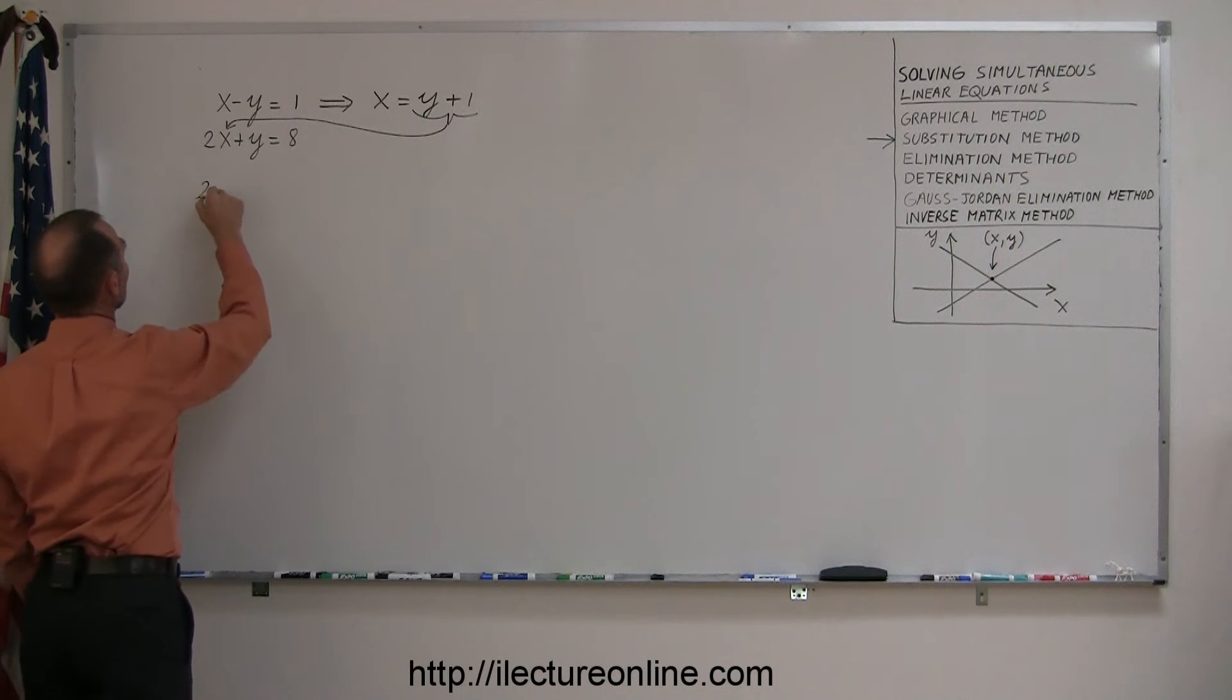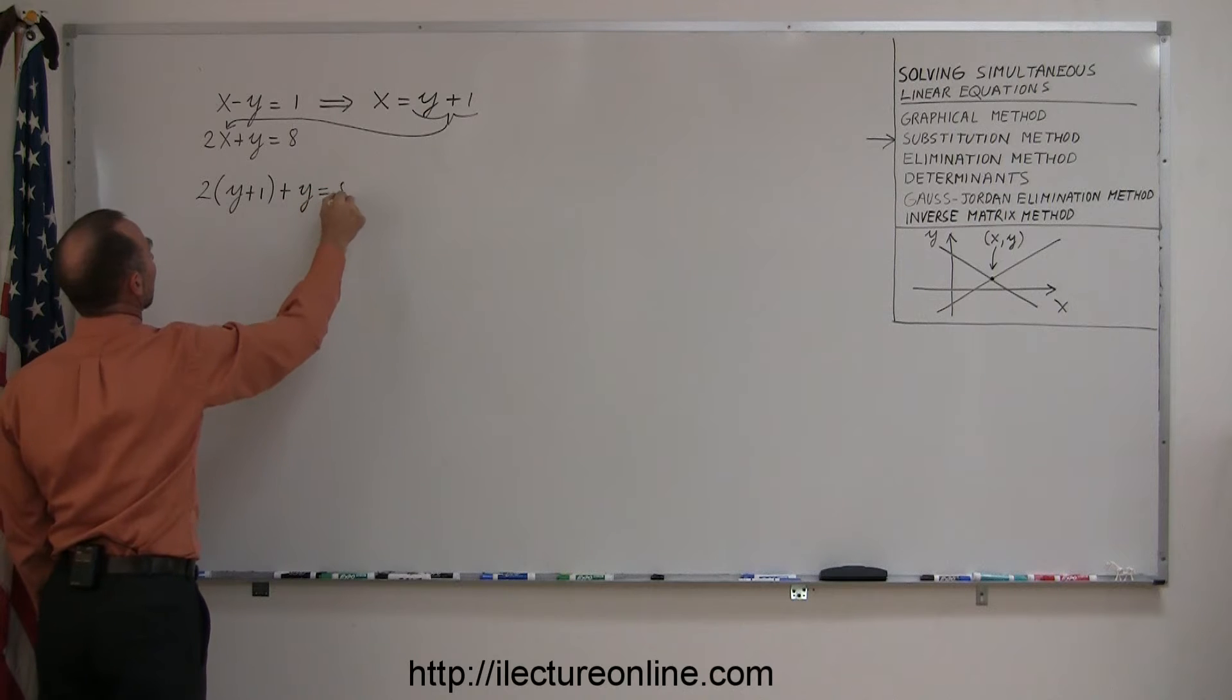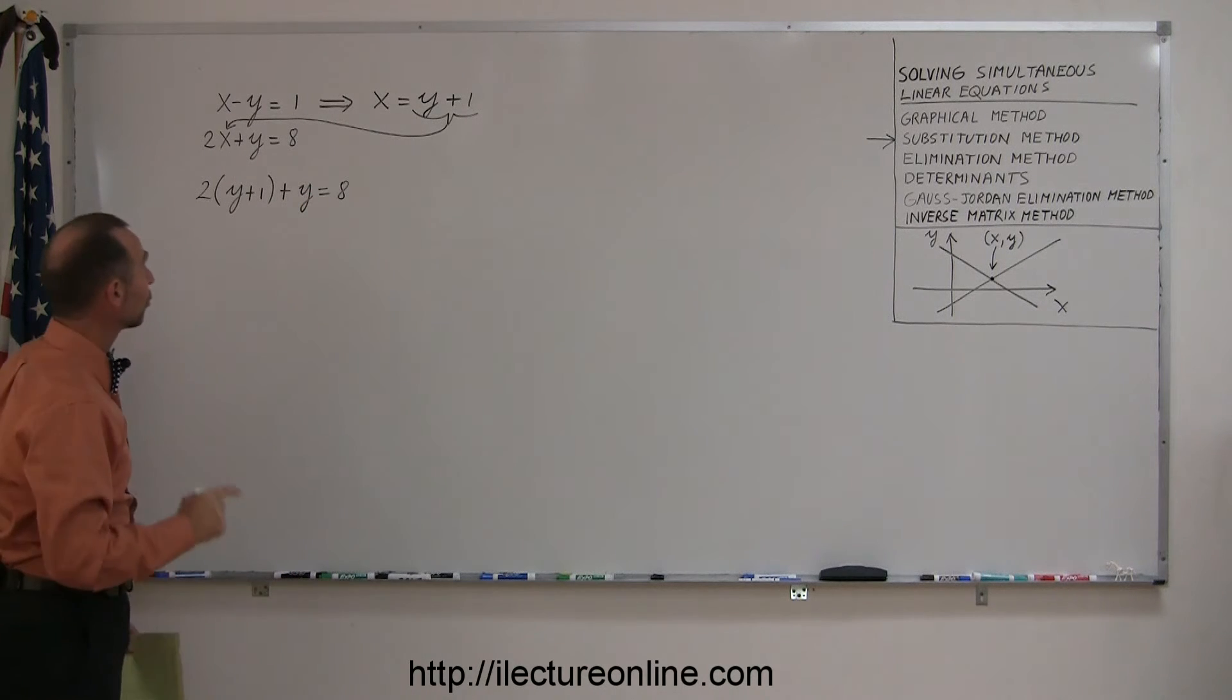Let's do that. So we have 2 times y plus 1, instead of x, plus y equals 8. And notice what you've done now. Now you end up with just one equation with only one variable, and you can solve that equation for the variable y.